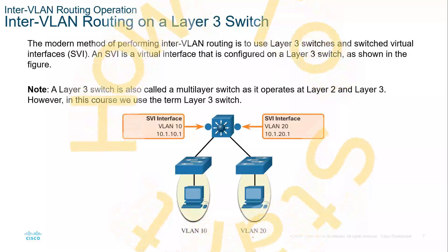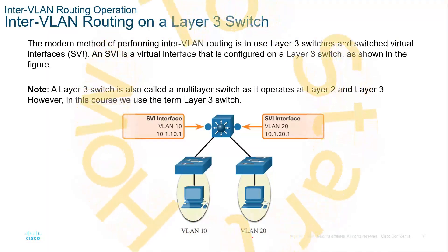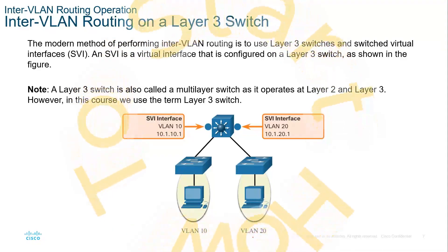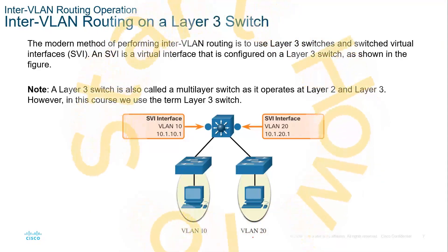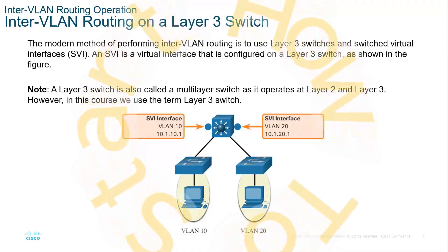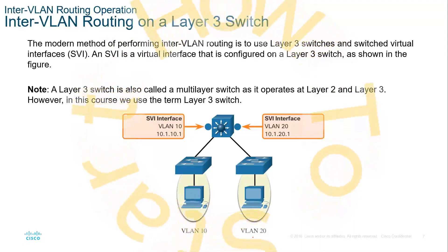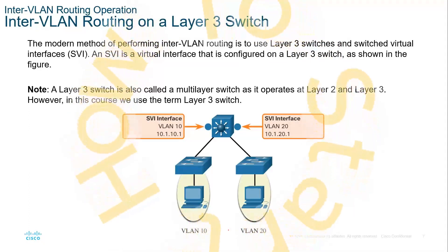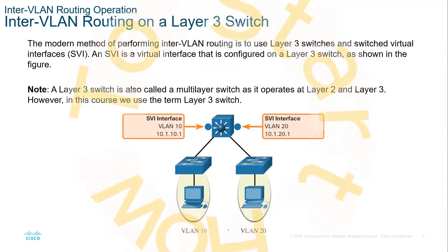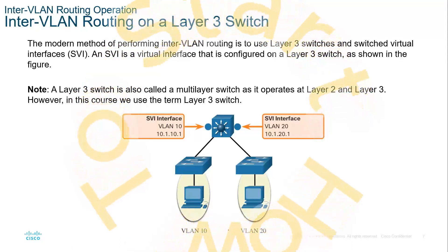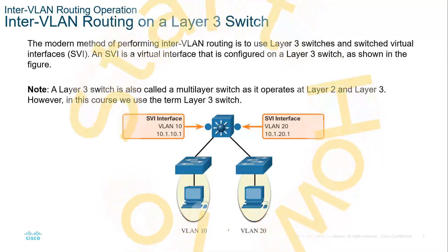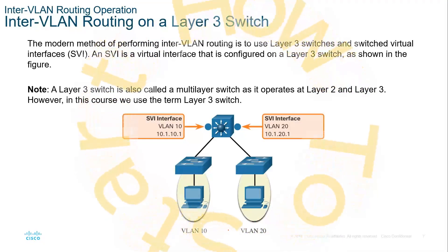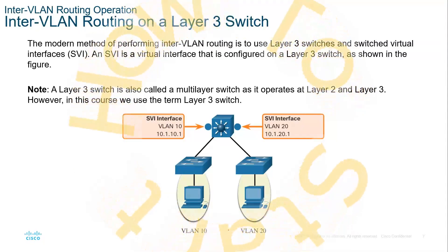We can also do this via a layer 3 switch using SVIs — switch virtual interfaces — that allow data to go from one VLAN to another. VLANs are separate networks, so moving between them requires a routing function or a routed port. On layer 3 switches, you can turn ports into routed ports.